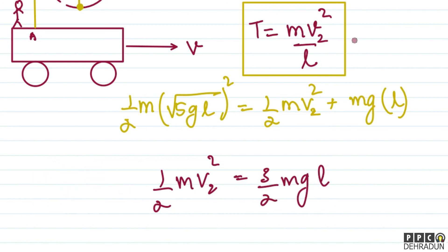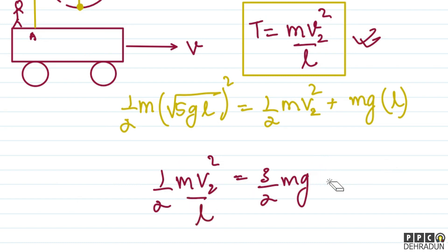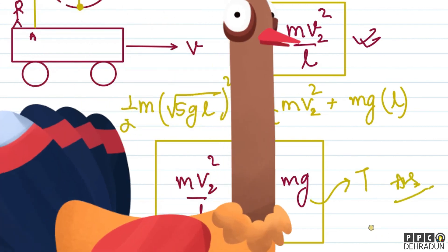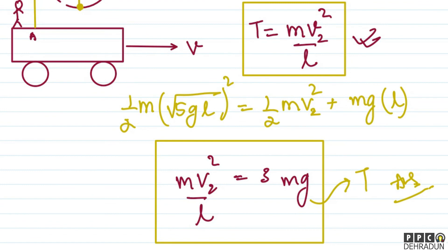We need mv₂²/L. Multiplying through by 2/m and dividing by L: mv₂²/L = 3mg. And that is the tension — T = 3mg — which is our answer. I hope you understood this solution well. If you have any doubt, feel free to contact me. Take care, bye bye.